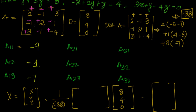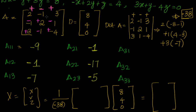A22: the element in row 2, column 2 — removing its row and column gives minus 8 minus 9 = minus 17, so A22 = minus 17. A23: removing row 2, column 3 gives 2×1 = 2, plus 3 = 5, but with a negative sign, so A23 = minus 5. A31: removing row 3, column 1 gives minus 1 minus 6 = minus 7, so A31 = minus 7.